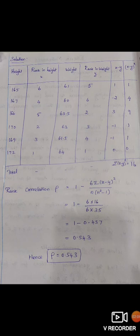Next column, you have to put the rank in height. 172 is the first rank, 170 is the second rank, 169 is the third rank, 167 is the fourth rank, 166 is the fifth rank, 165 is the sixth rank.